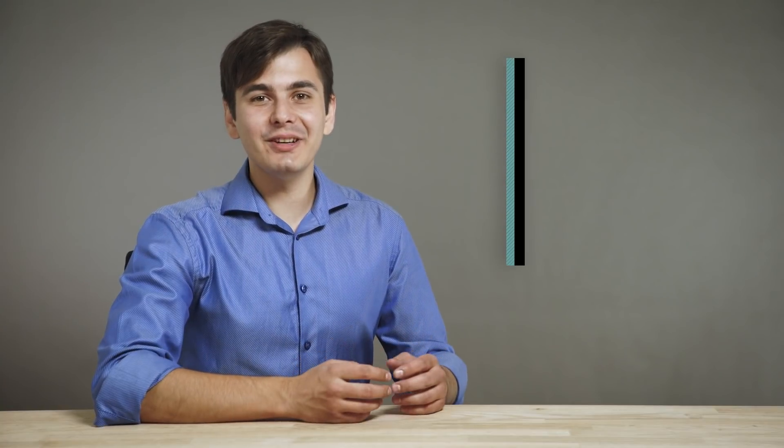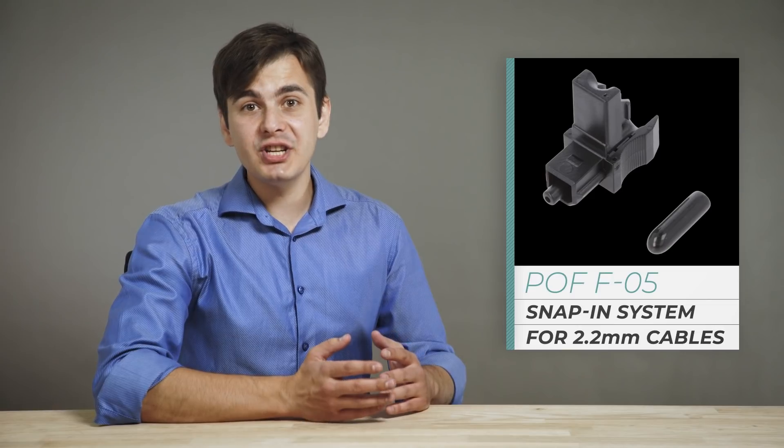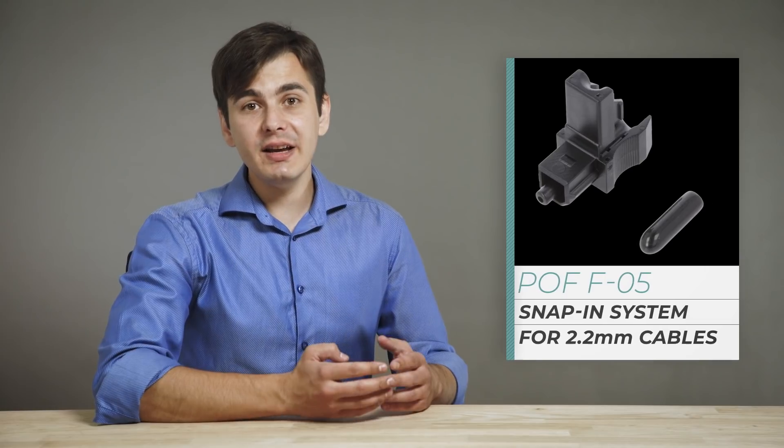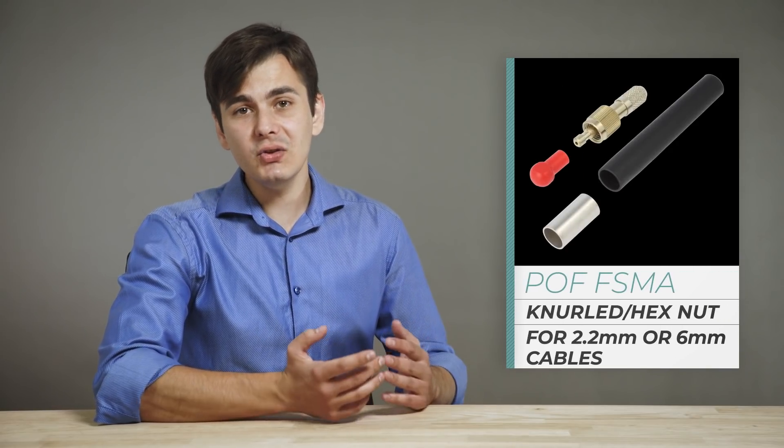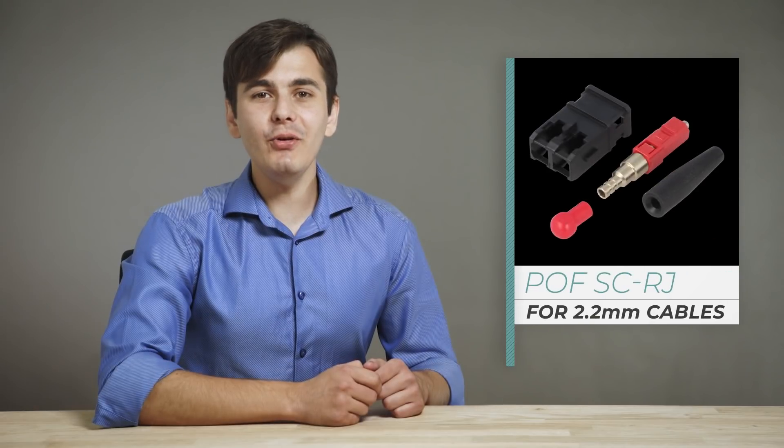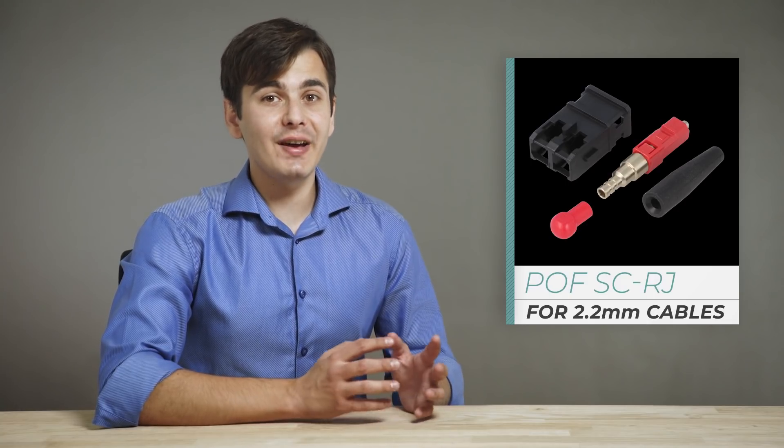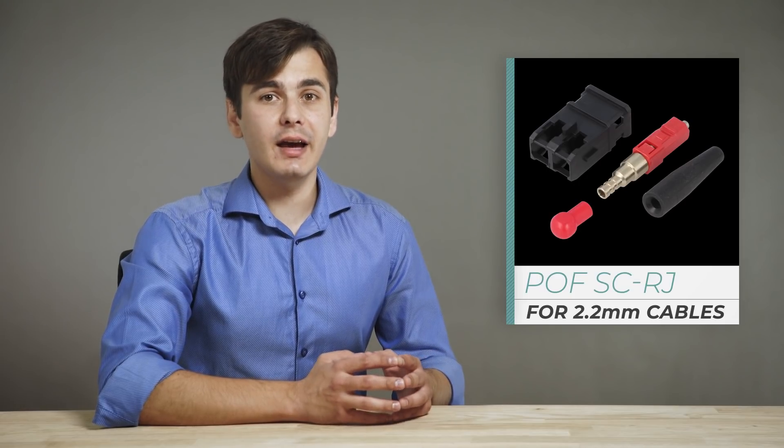The lab fiber optic connectors offer includes POF-HFBR, which comes in simplex and duplex for 2.2 mm cables, the POF-FBR, which have a snap-in system, the POF-FBR, which comes in simplex for 2.2 mm cables, next we have the POF-FSM-A and ST connectors suitable for 2.2 or 6 mm cables. The POF-SC RJ connectors are suitable for 2.2 mm cables, they come with SC connectors, SC RJ housing and two anti-kick and dust covers.